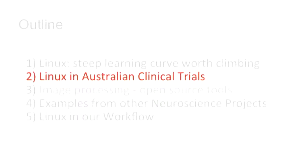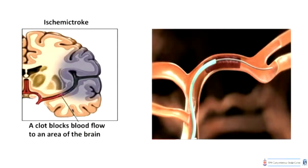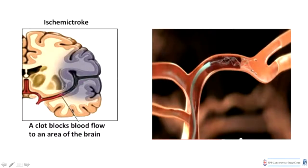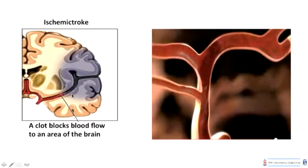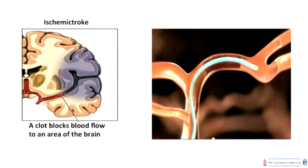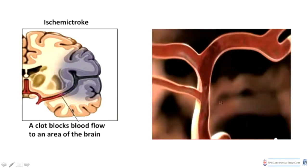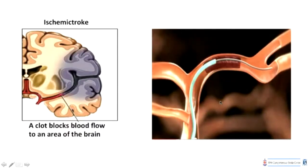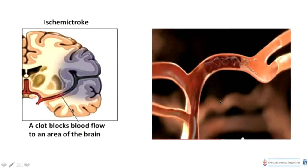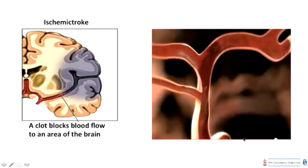One of the major components of our work is to manage and support medical imaging post-processing in stroke-based clinical trials. There is a picture where a clot blocks blood flow to an area of the brain — the black region shows that part of the brain is dying. Doctors have to either give a drug or take the clot out to restore normal blood flow, as represented in the animation where a wire is inserted and the clot is removed, restoring normal blood flow.